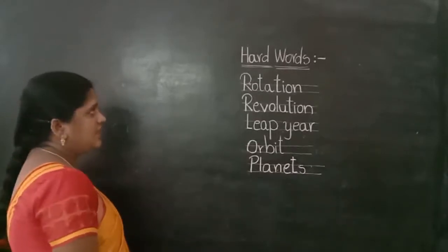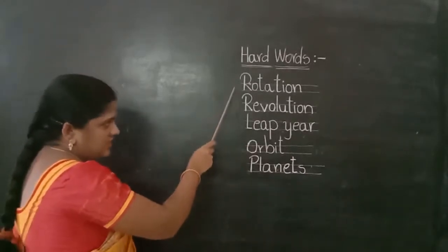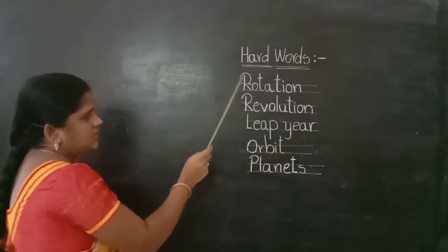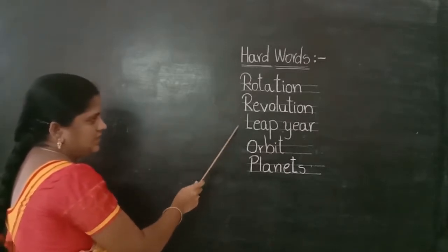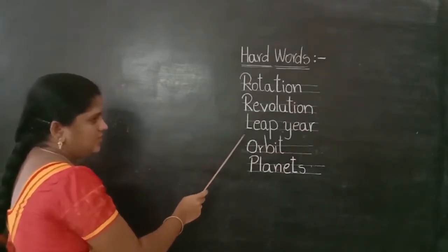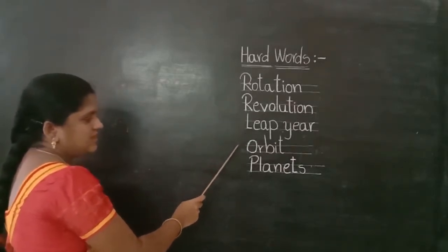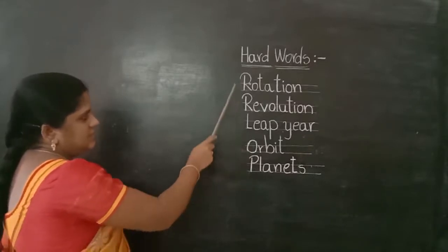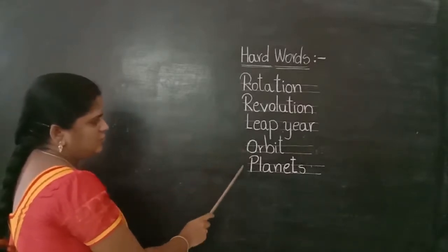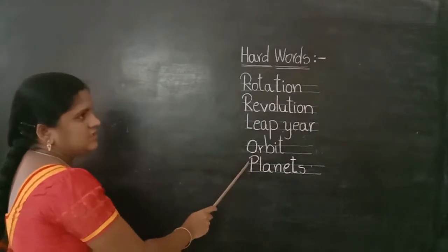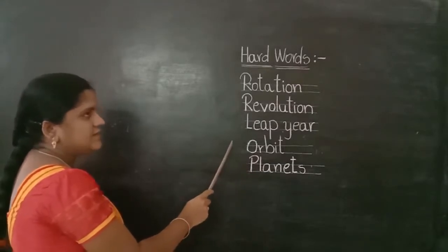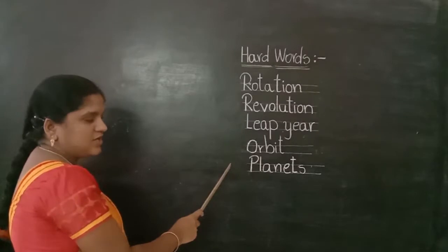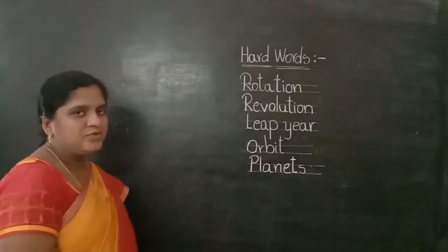Okay children, these five hard words — rotation, revolution, leap year, orbit, planets — learn and write three times at home. Thank you. I will meet you in the next class.